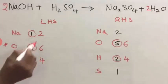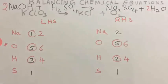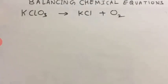Now check: Na=2, O=6, H=4, S=1 on LHS; Na=2, O=6, H=4, S=1 on RHS. Thus the equation is balanced. Let us balance one more equation.